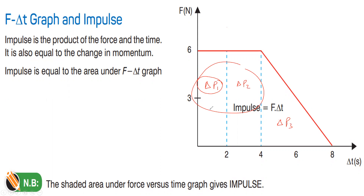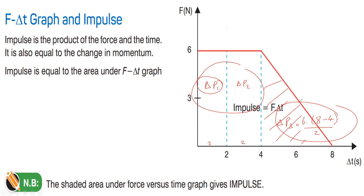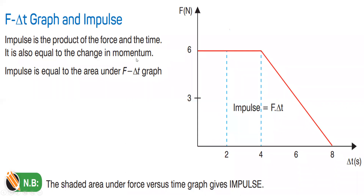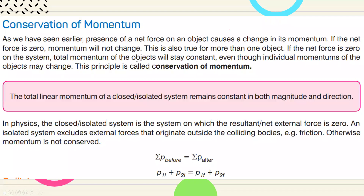What is delta p1? It's 6 times 2. Delta p2 equals 6 times (4 minus 2), also 2 — when delta t is 2 each time. What about delta p3? It's 6 times (8 minus 4) over 2, because you have a triangle here, so you must use that formula to calculate. When you have graph questions, calculate the area for each section.